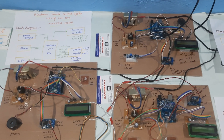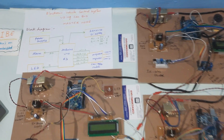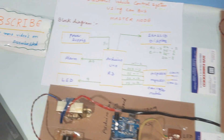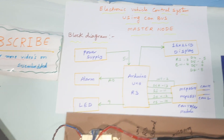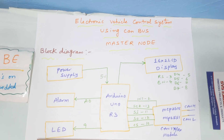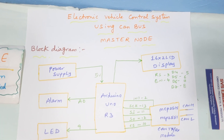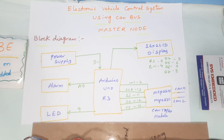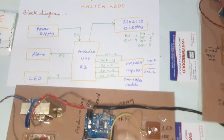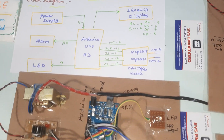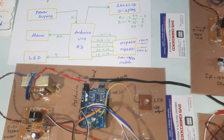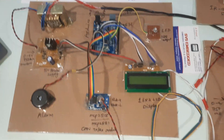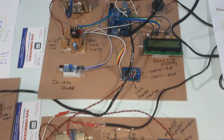Hi, we are from SVSM. The project title is Electronic Vehicle Control System using CAN protocol or CAN bus. In this project we are using three nodes: one master node, one slave 1, and one slave 2.